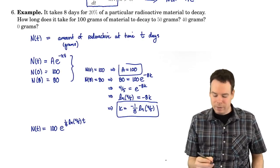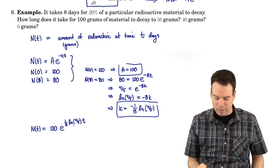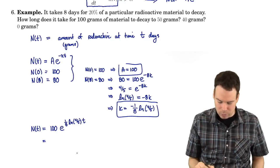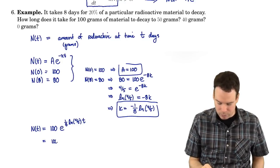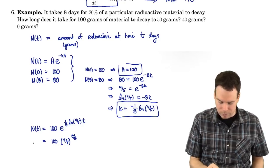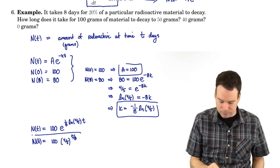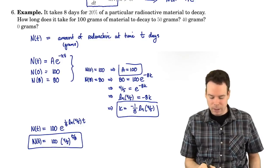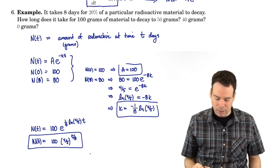We could simplify this because it's an exponential with a logarithm in the exponent. So this would be 100·(4/5)^(t/8) — 4/5 becomes our new base and the exponent is t/8. A bit of simplification. We have a couple of ways to look at it: we could use base e or we could use base 4/5.